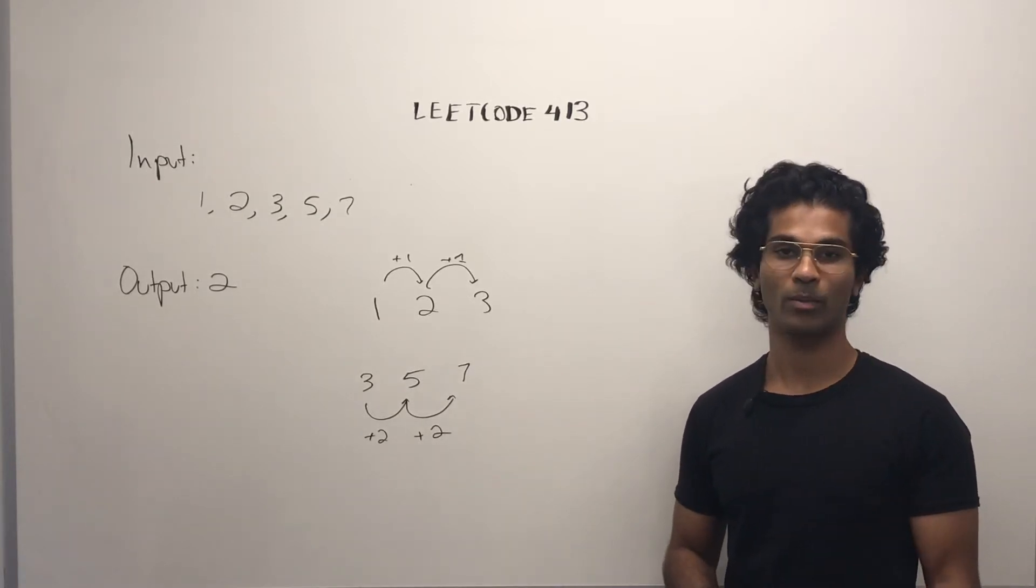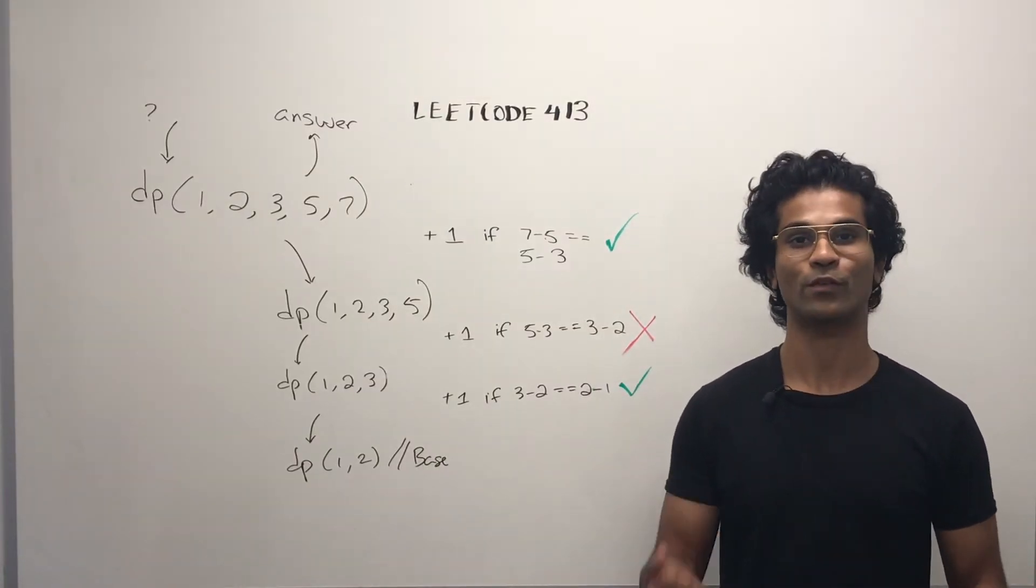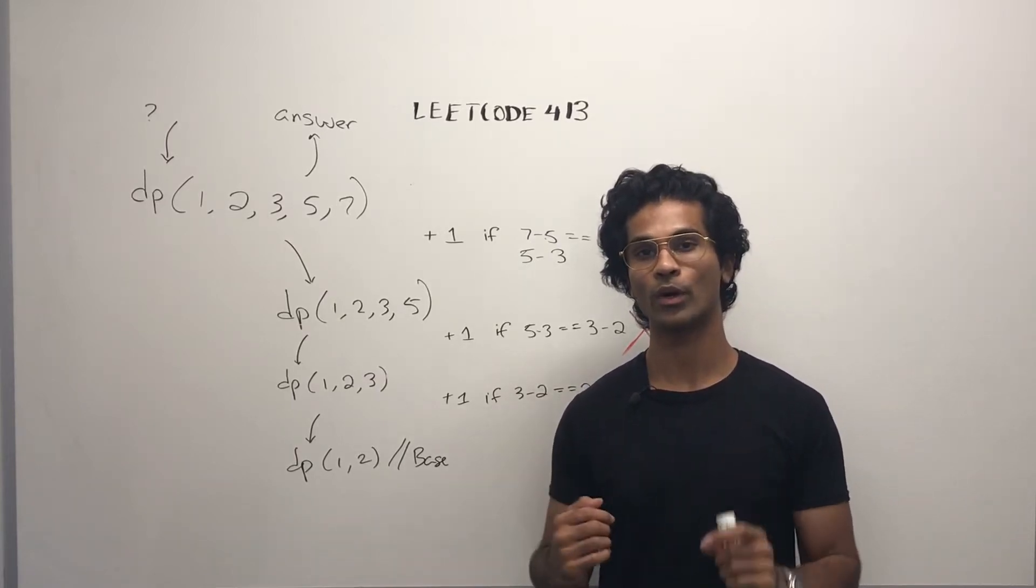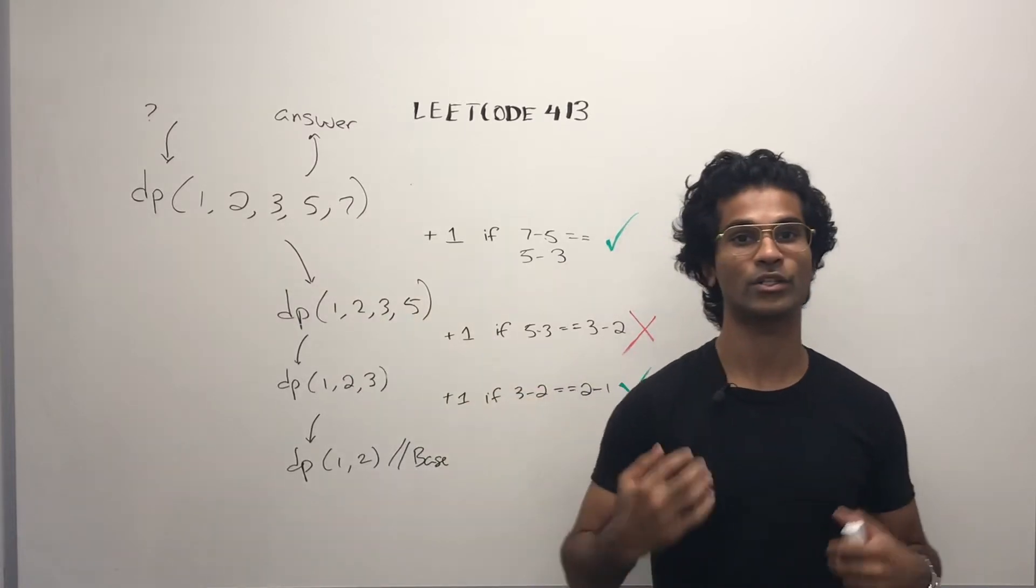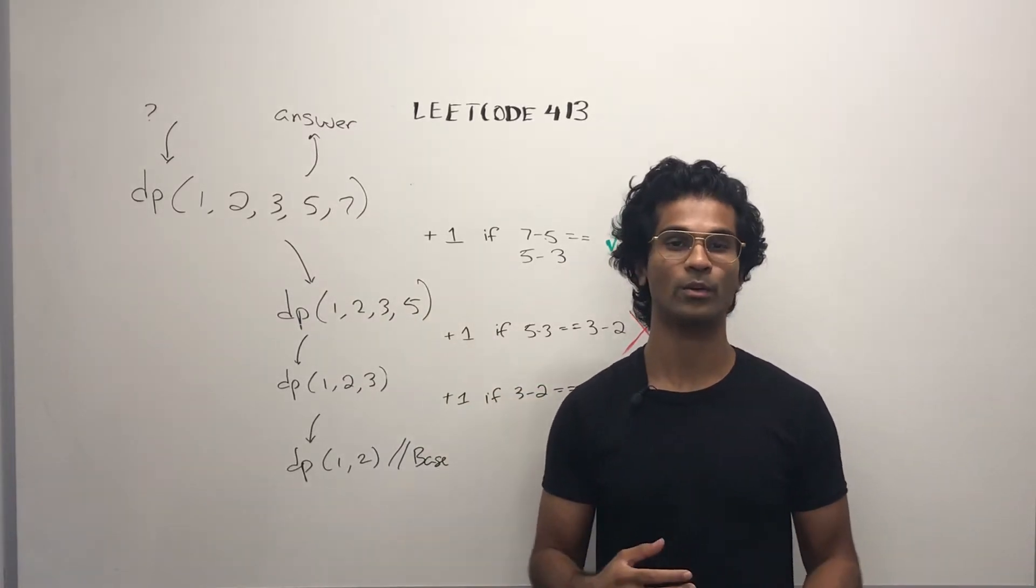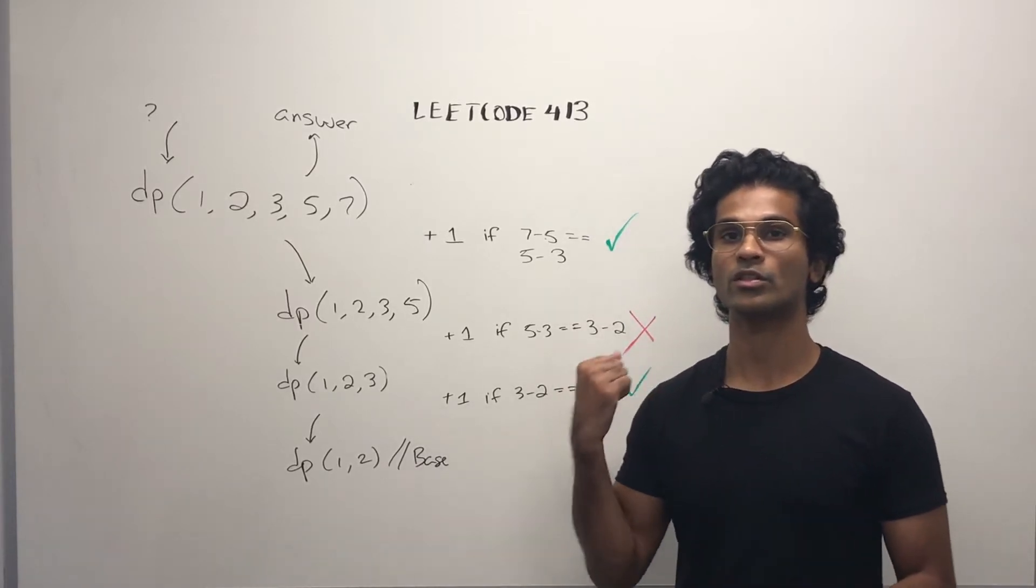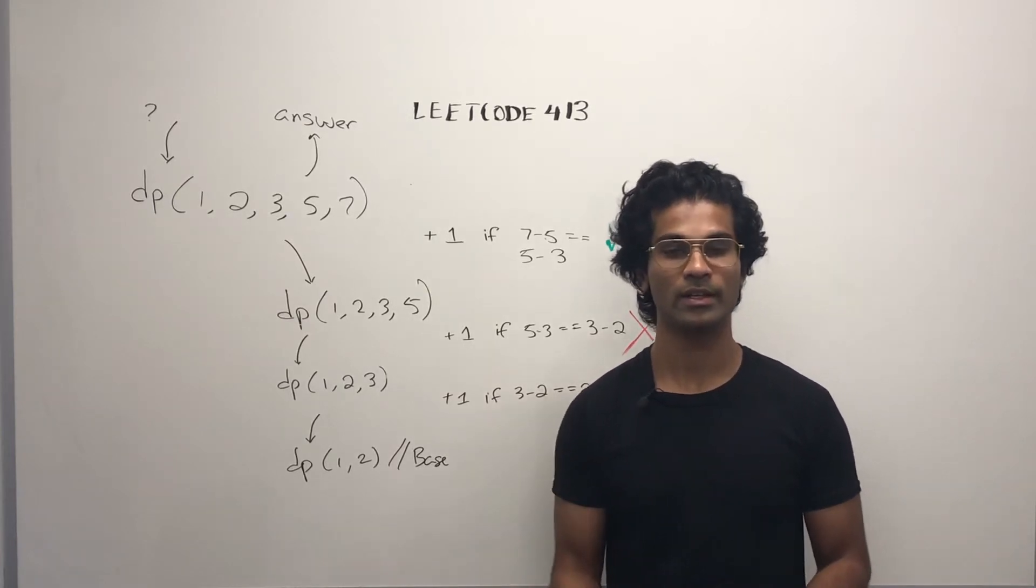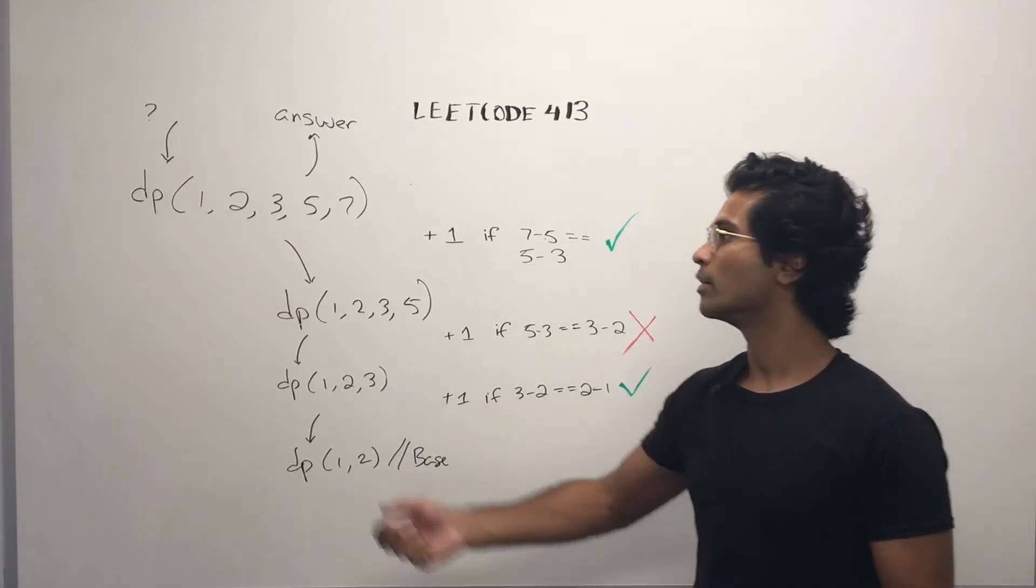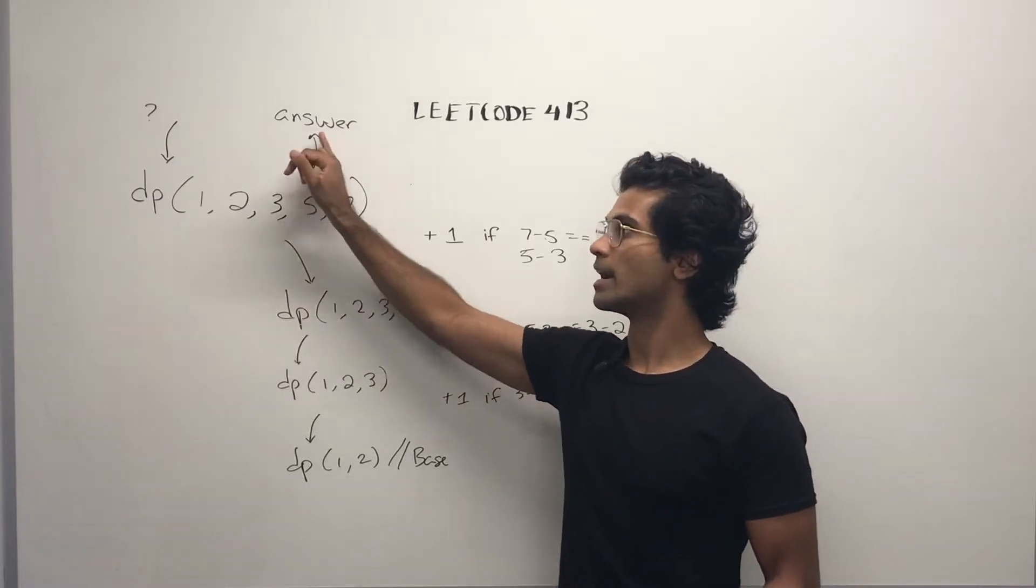When dealing with dynamic programming, what we do is first assume that a solution to this problem does exist. In our case, what we're going to do is take the original thing and trust that a solution to this does exist, and that we can figure it out using something to do with the subproblems.